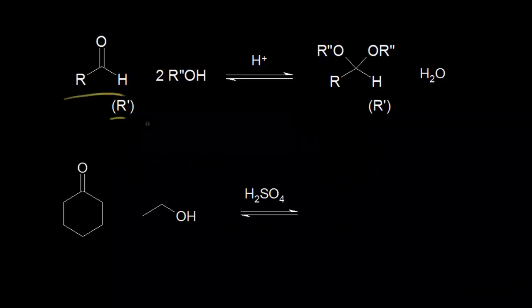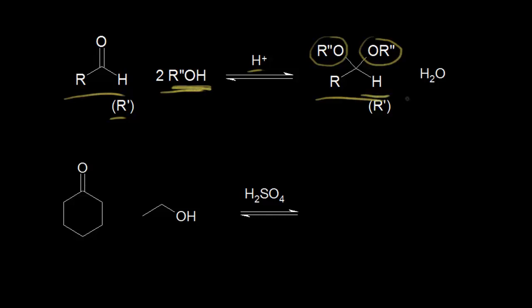If we react an aldehyde or a ketone with an excess of alcohol in an acidic environment, we're going to form an acetal. Over here on the right is our acetal. You can see the OR double prime from our alcohol and OR double prime from our alcohol. You're also going to form water in this reaction. This reaction is at equilibrium, and so there are several things you can do to shift the equilibrium to the right and make more of your acetal product. One thing would be to remove the water as it forms.